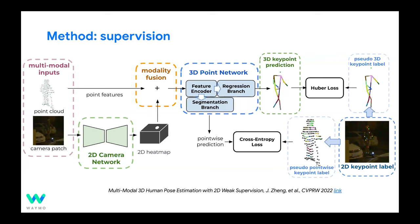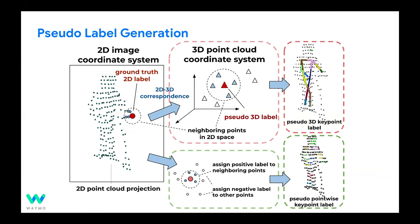The mapping from 2D to 3D keypoints is done simply: we find the closest point in 3D space and use that to supervise the 3D model. We also tried mapping 3D predictions back to 2D space for supervision, but that performed much worse compared to leveraging supervision directly in 3D space.